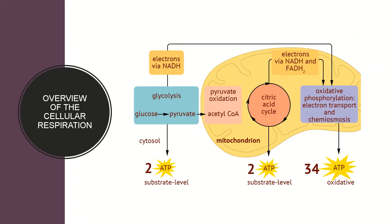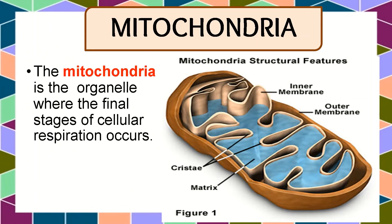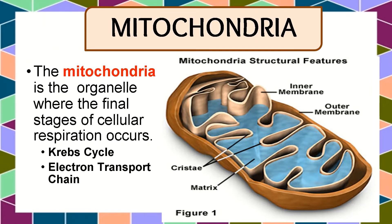The products from glycolysis will enter the mitochondria. The mitochondria is composed of inner membrane, outer membrane, cristae, and the matrix. The mitochondria is the organelle where the final stages of cellular respiration occur — Krebs cycle and electron transport chain.